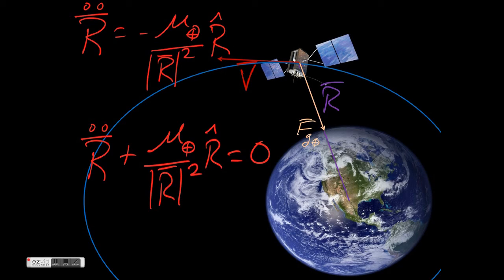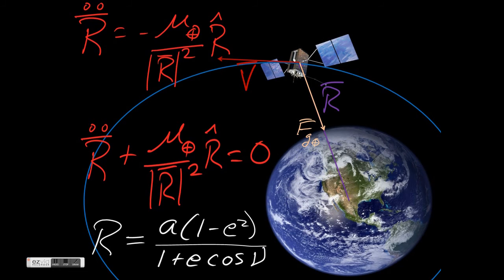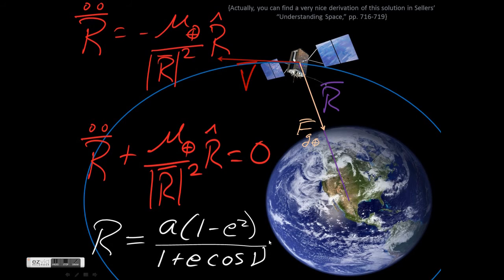Newton managed to solve this equation, and here's the result: it's the equation of a conic section with two constants, A and E, and a single variable nu that we'll discuss in a moment. Your text has a full derivation of the solution on page 716. Now let's look at one of those conic sections — an ellipse — and the geometry of a satellite in an elliptical orbit.